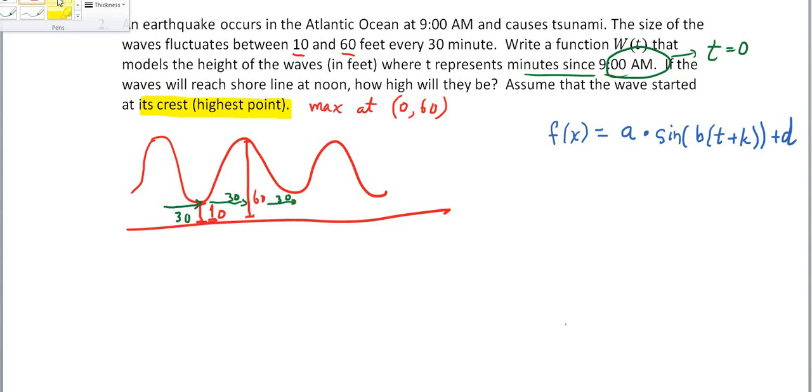And remember that these are all variables here, and K here is the phase shift. B will help us with the horizontal shrink and stretch, and then A is the amplitude. So A is the amplitude. The period is going to be 2π over B, and then K is the phase shift, and D is the vertical shift.